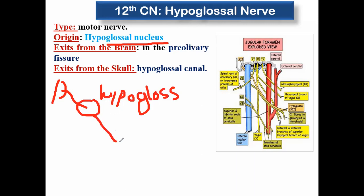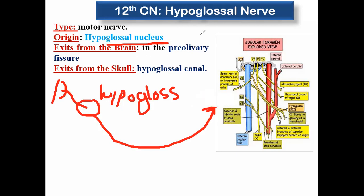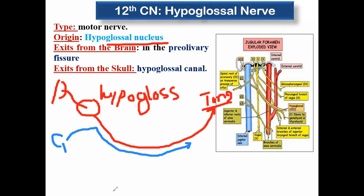From the hypoglossal canal, the nerve makes a loop to reach the tongue. During its course, cervical nerve C1 asks to run alongside the hypoglossal — so C1 runs along with the hypoglossal nerve. Meanwhile, C2 and C3 unite together to form the descendens cervicalis.